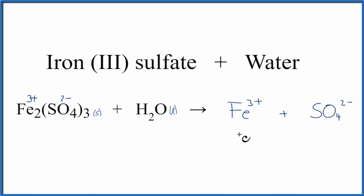We do need to make sure this is balanced though, because we have two iron 3 plus ions. So we need to put a 2 here, and then we have three of these sulfate ions. We need to put a 3 here.